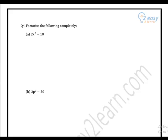Exercise 3.2, factorization of algebraic expressions, question number four, part a. There is a square term, but 18 is not a perfect square number. A negative sign is there, but since 18 is not a perfect square, we cannot apply the difference of squares method. So our first method is taking common.